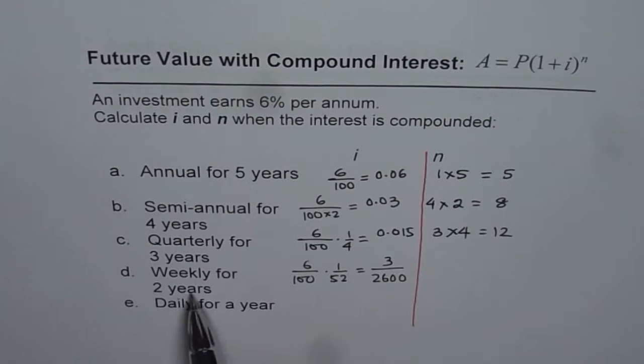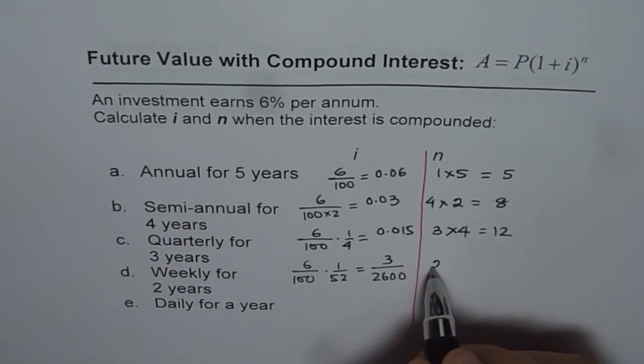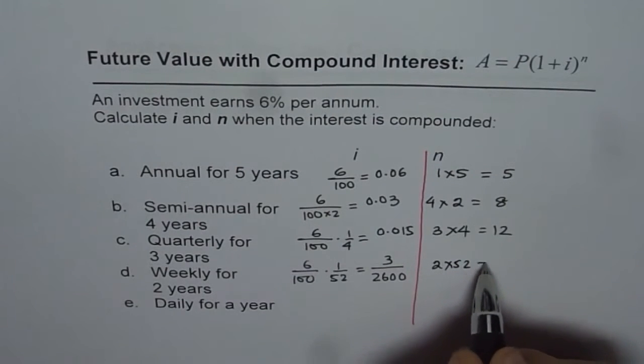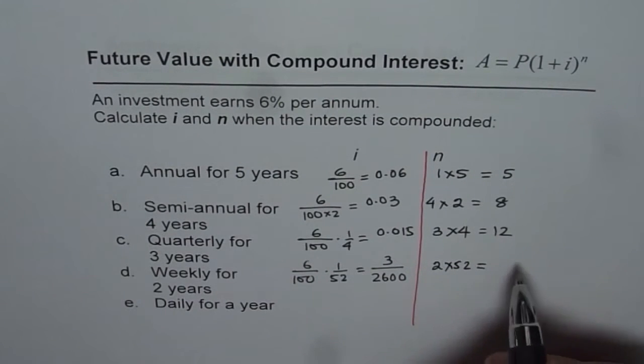Now weekly for 2 years. So for 2 years means 52 times 2. So 2 years times number of times it is compounded. So 52 times 2, 104. So n value will be 104.